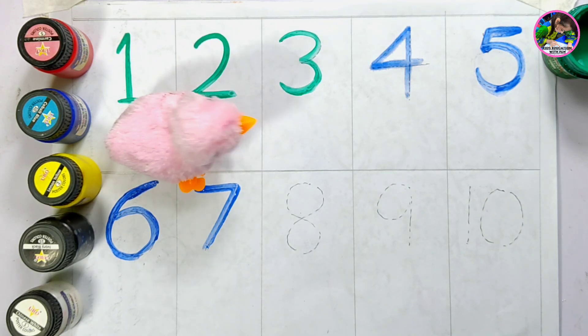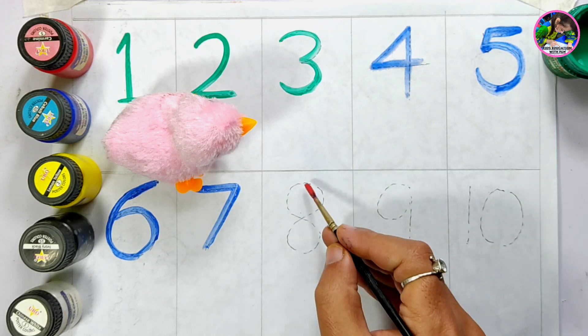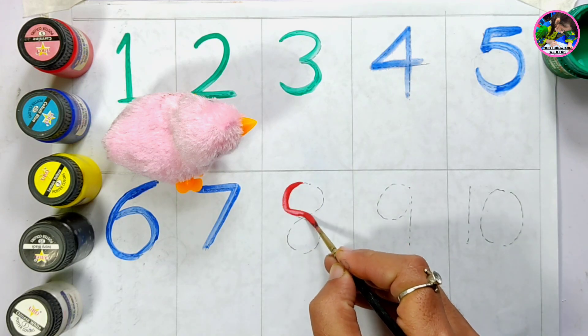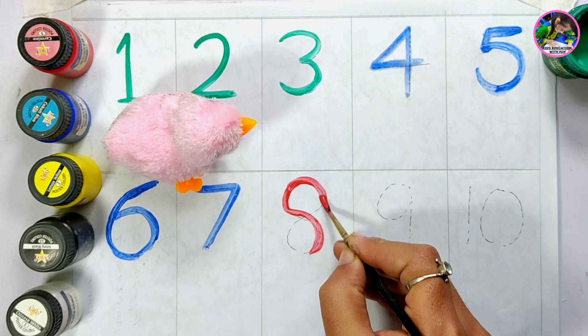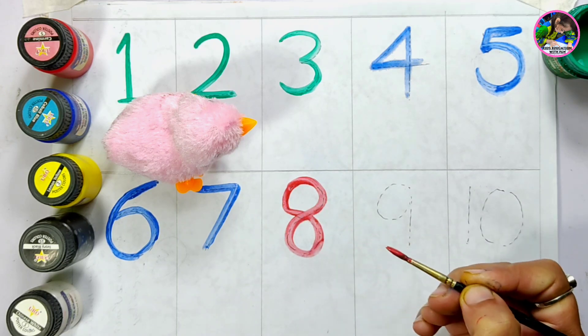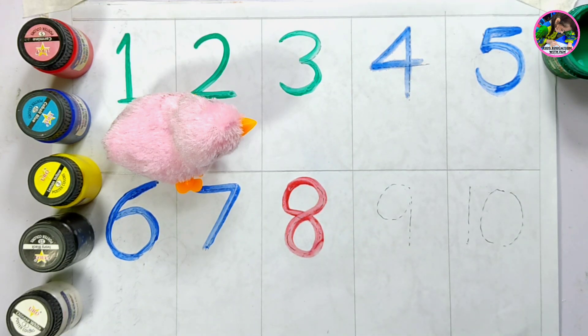And then we have another number, that is number eight. Let's use red color. Number eight. This is number eight, red color, number eight.